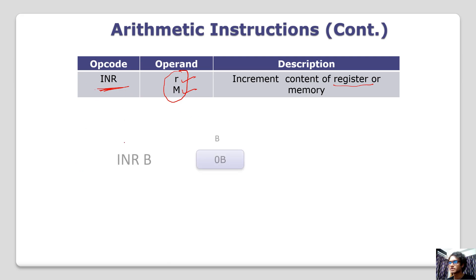INR is the increment instruction. INR B means increment B. The value of B is 0B.